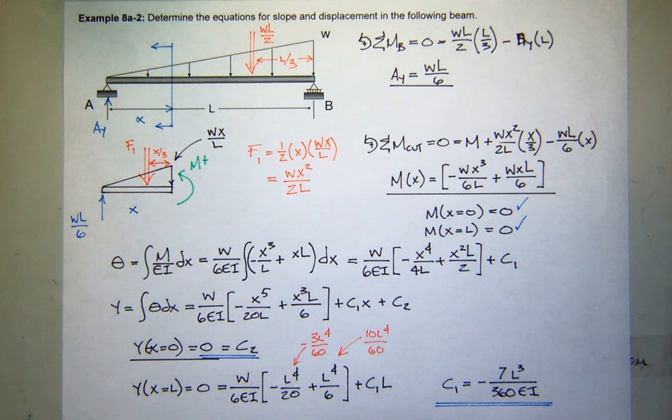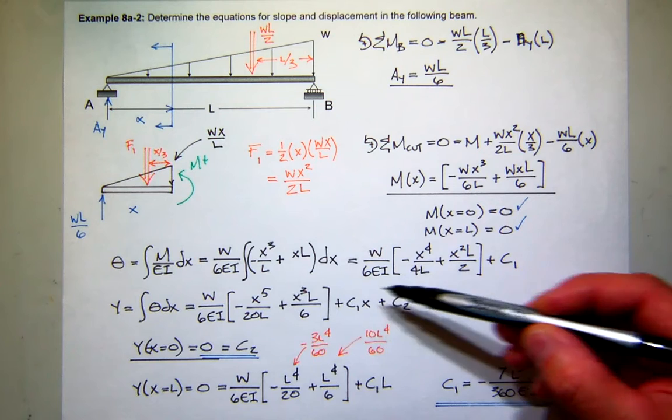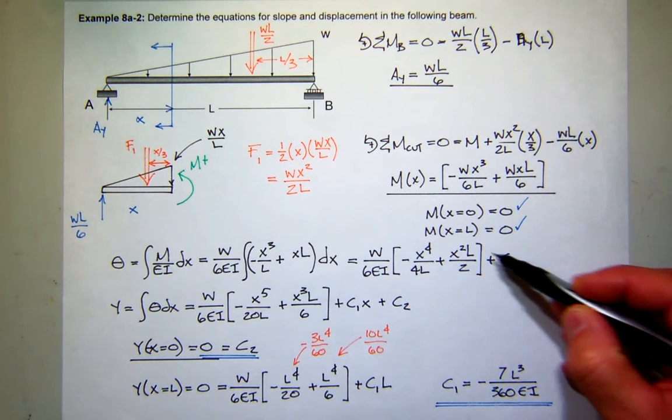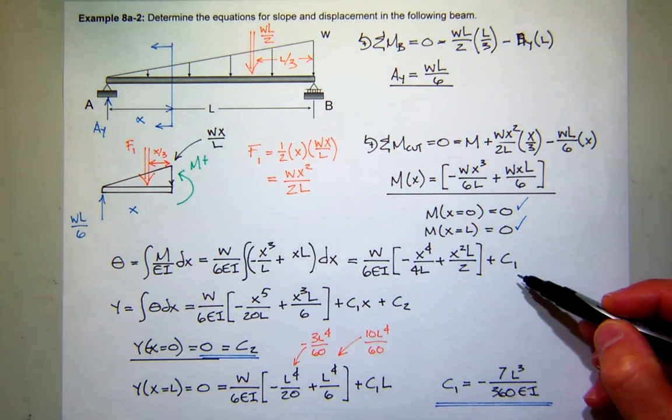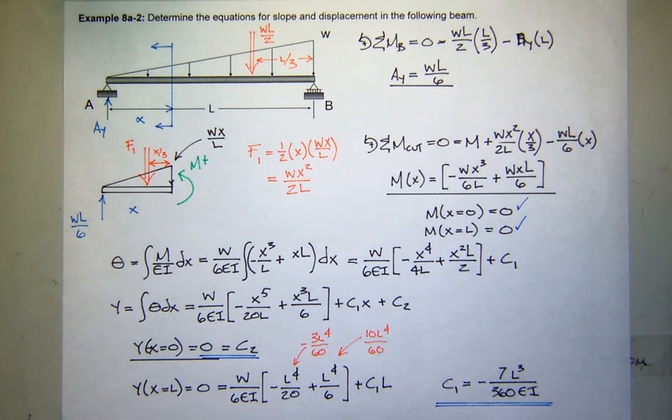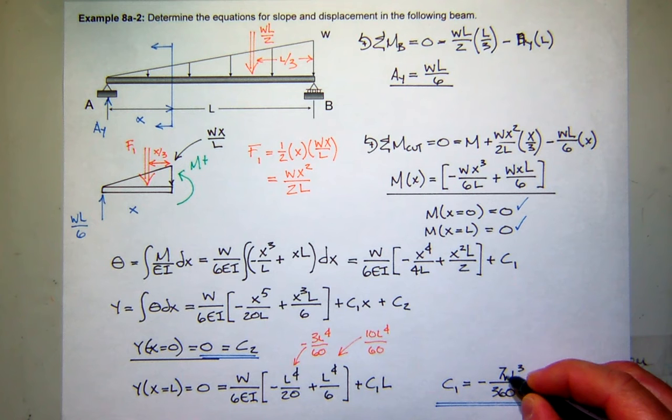So at this point, we have equations for slope and displacement. We know a value for C2. We know a value for C1. So you can go back up here to the equation for the slope. Plug in C1. Now you have an equation for the slope. Now remember, I lost it. Thank you. So there should be a W there. Thank you.